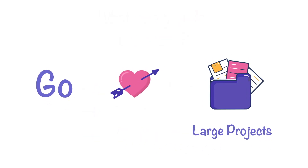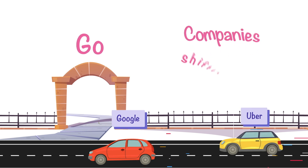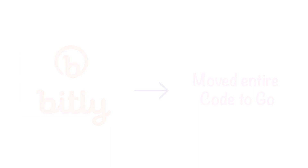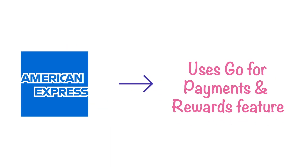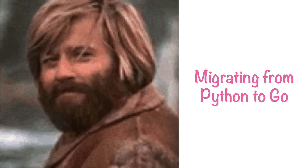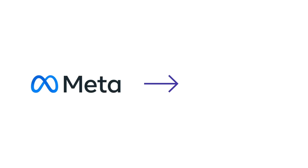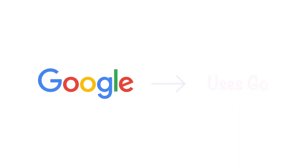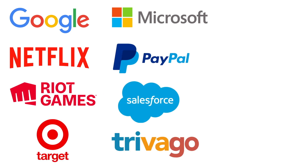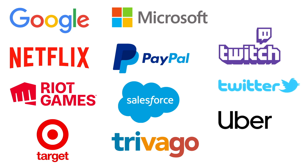Go is so good at handling large projects that many companies have moved their entire codebase to Go. One such product is Bitly. Then there is American Express, which uses Go for payments and rewards features. Dropbox is actively migrating their performance-critical backend services from Python to Go. Meta, which was Facebook earlier, is using Go language now. Google, of course, is using it since they created it. Microsoft, Netflix, PayPal, Riot Games, Salesforce, Target, Trivago, Twitch, Twitter, Uber — and the list goes on.